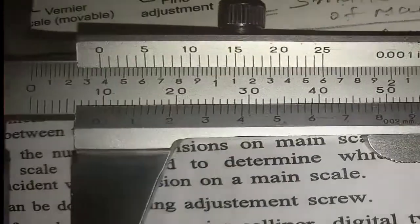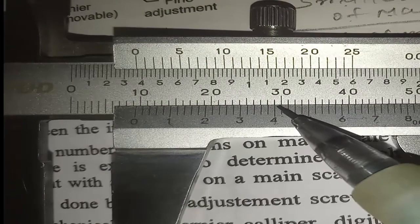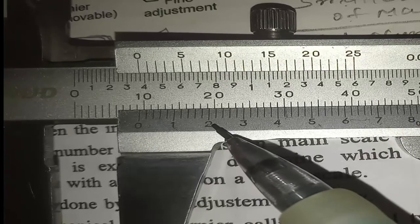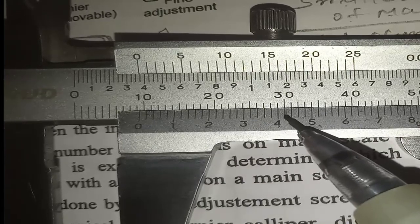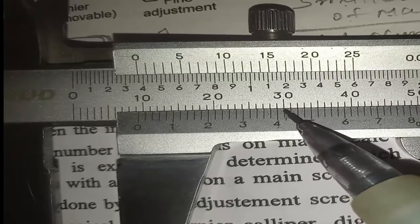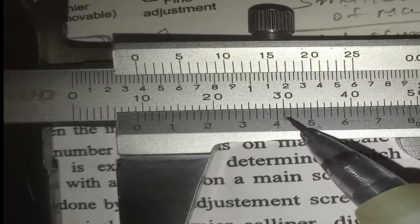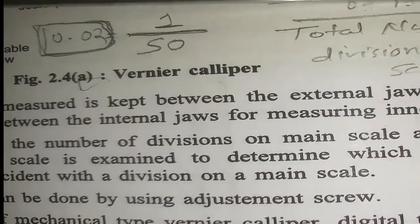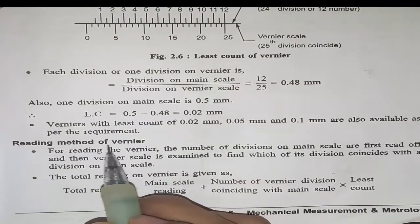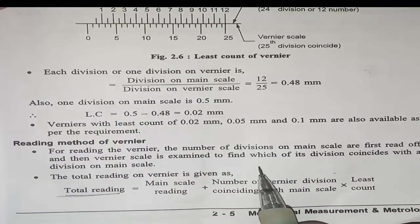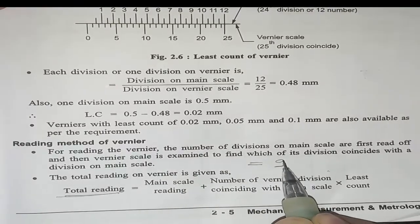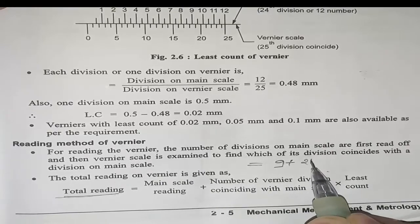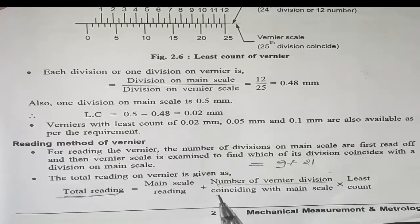Looking at the vernier scale, we count: 0, 5, 10, 15, 20 — and the 21st line is completely matching with the main scale. So 21 divisions on the vernier scale are coinciding with the main scale. Now, to calculate the total reading: total reading = main scale reading + (vernier division coinciding × least count).